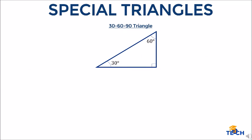For the second triangle, we have the 30-60-90 triangle. Recalling from geometry: if the shorter leg has a length of 1, then the other leg is square root of 3, and the hypotenuse is 2. You can refer to the figure here.